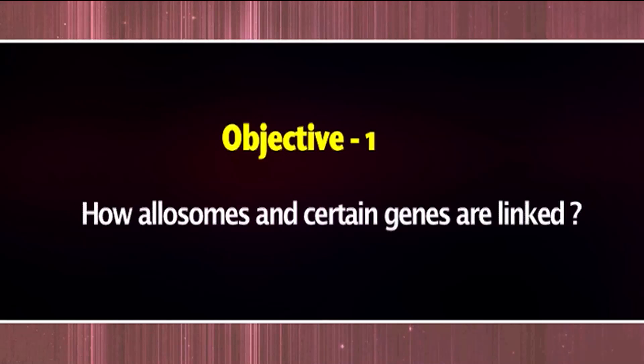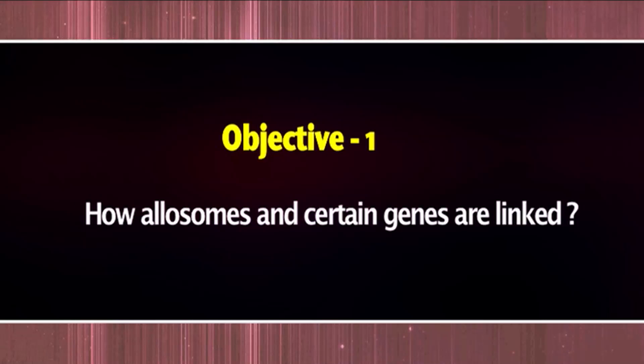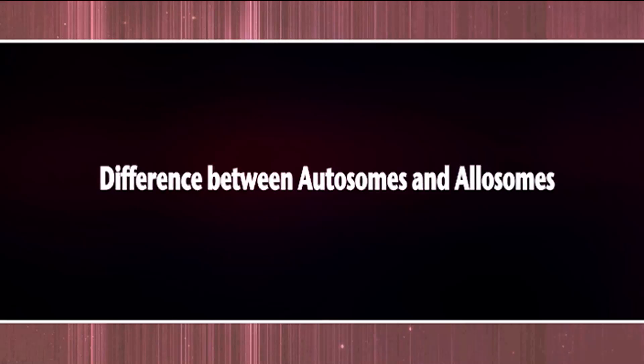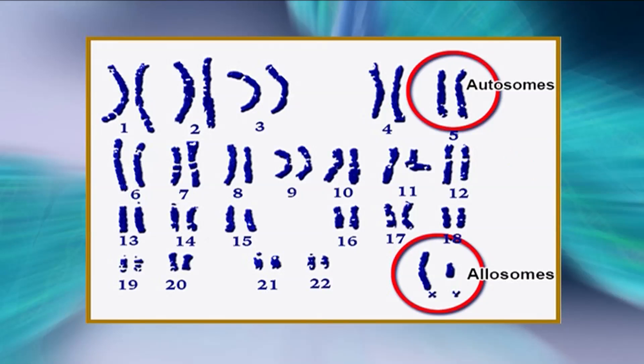Our first objective is how allosomes and certain genes are linked. Sex chromosomes also contain autosomal genes which codify several proteins related to non-sexual traits. Let's understand the difference between autosomes and allosomes. Autosomes are defined as the chromosomes other than the sex chromosomes. Let's take a look at the karyotype of humans — a picture of a person's chromosomes.